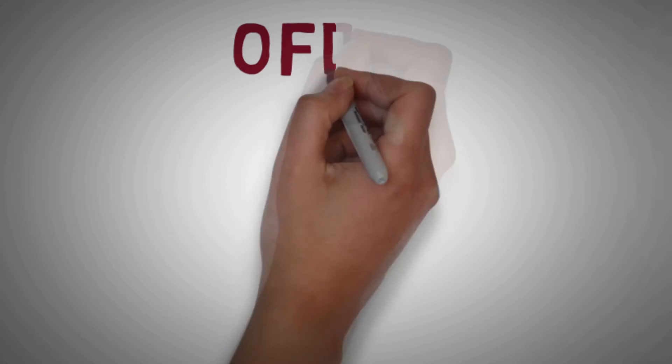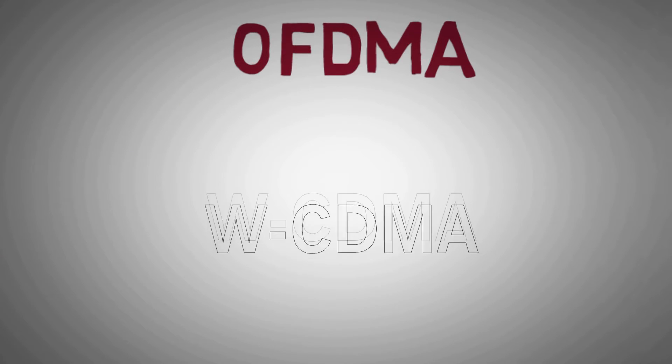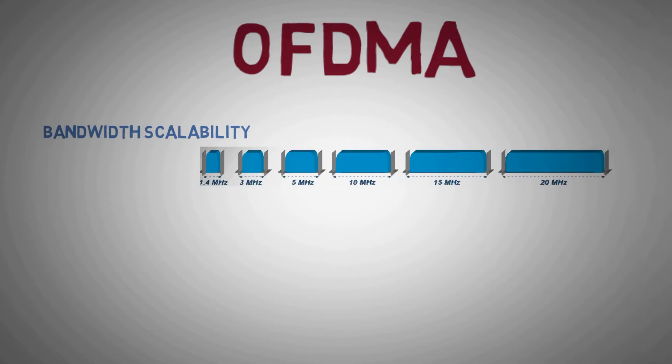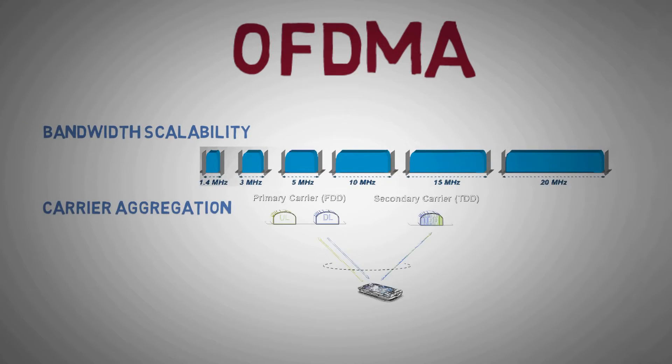OFDMA comes with several advantages over WCDMA like bandwidth scalability, carrier aggregation, low intersymbol interference.